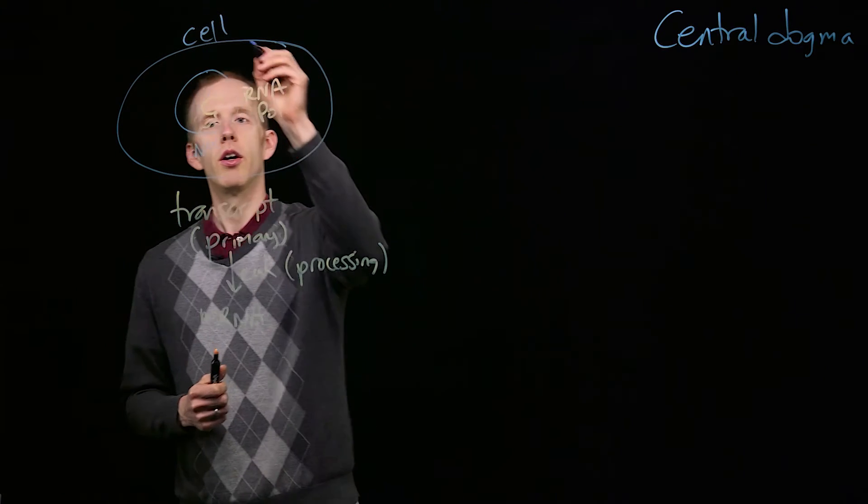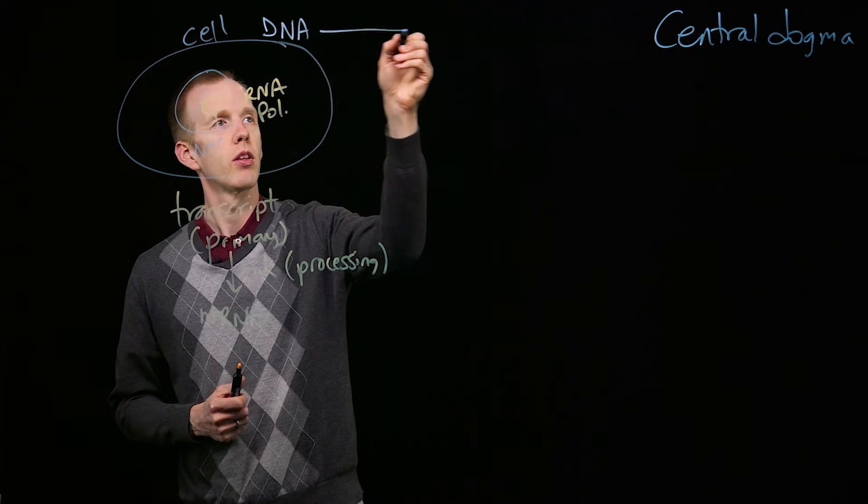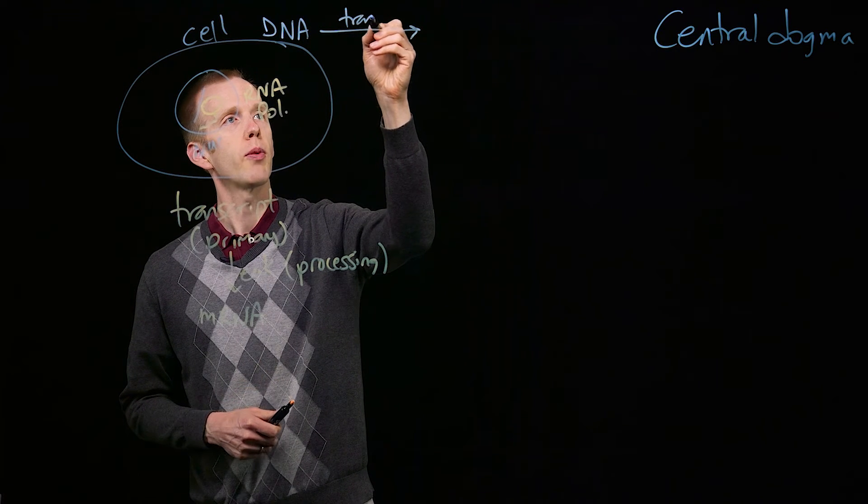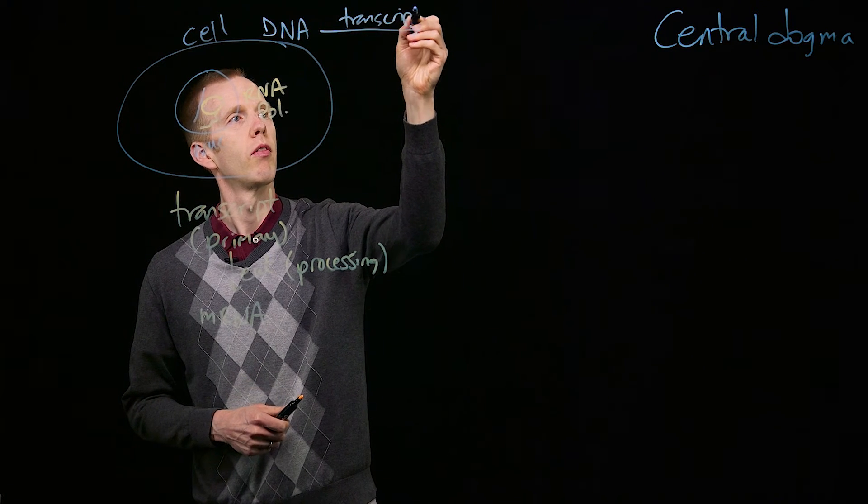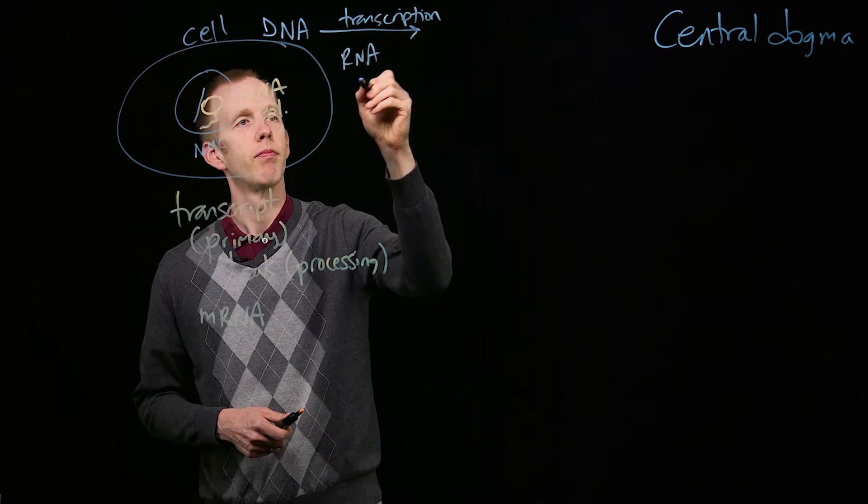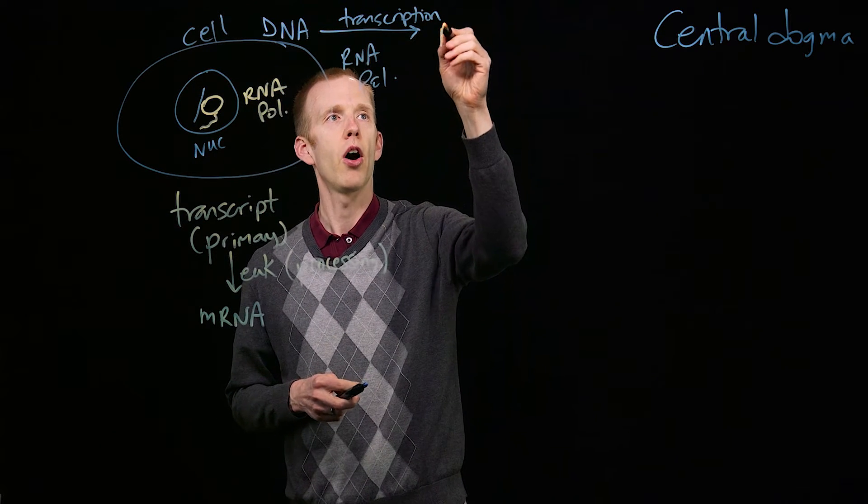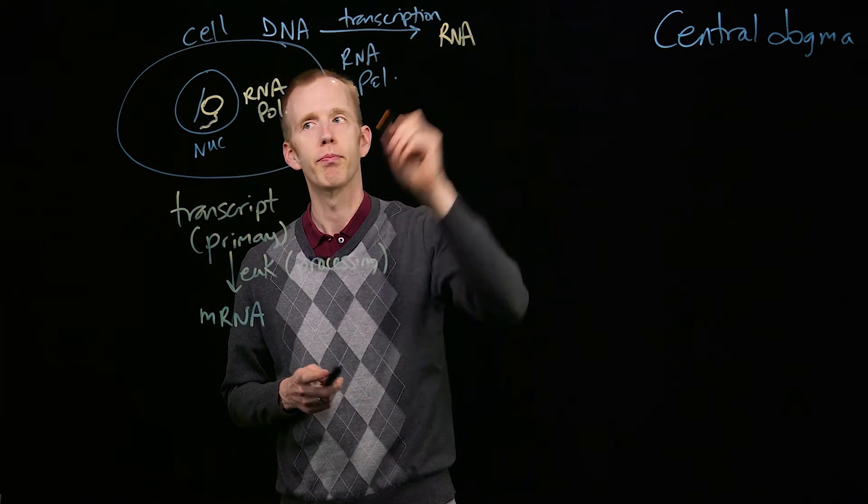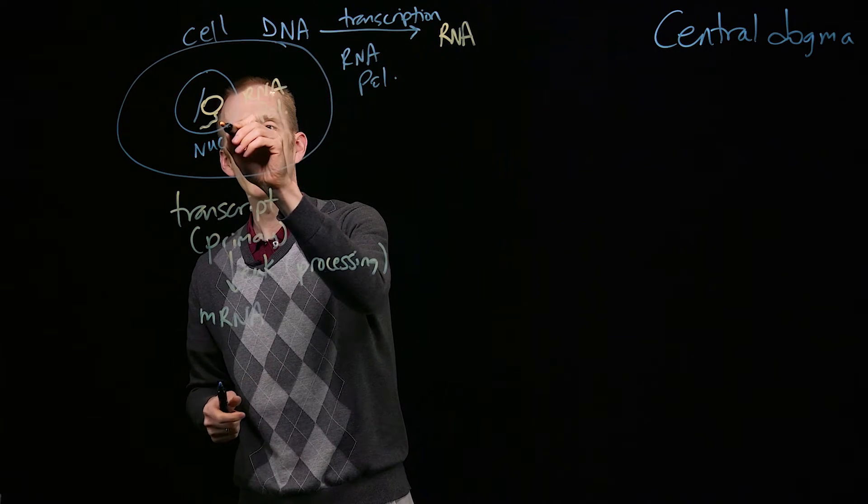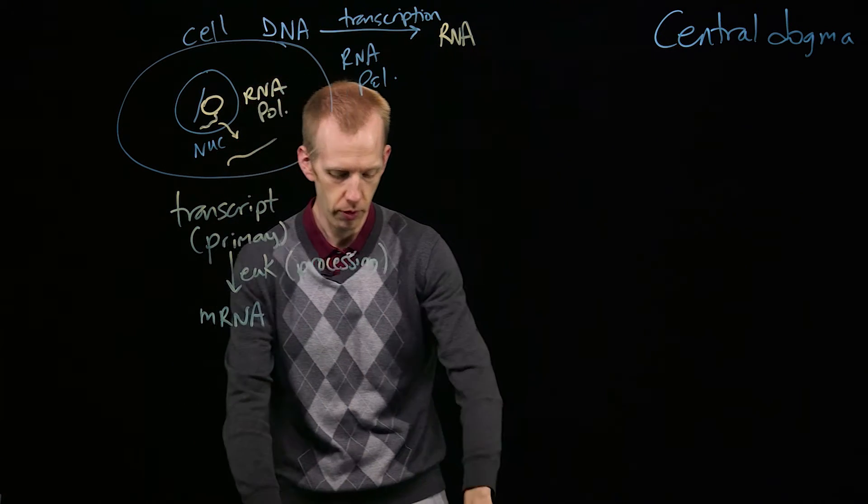So in the cell, in the nucleus, we have DNA, we have transcription with RNA polymerase, and that produces an RNA molecule. That RNA molecule gets exported into the cytoplasm from the nucleus.